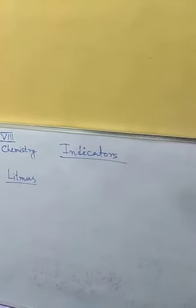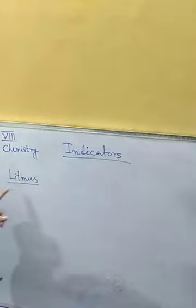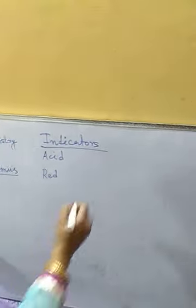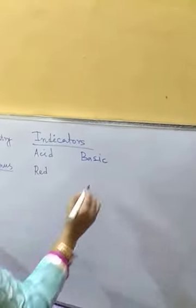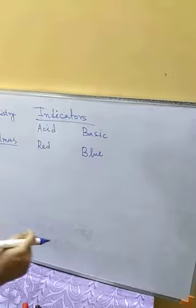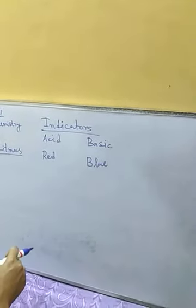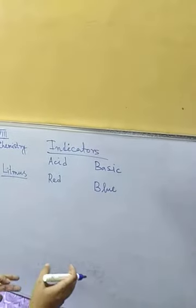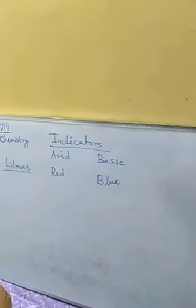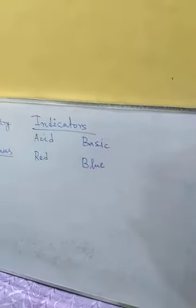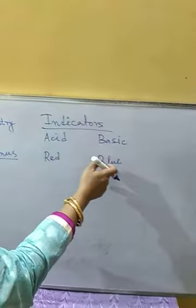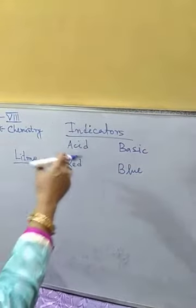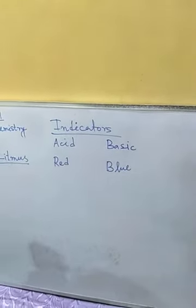First of all, litmus. In acid medium, litmus is red, and in basic medium litmus is blue. So if you dip a blue litmus in an acid solution, it will convert to red. And if we dip a red litmus in a basic solution, it will convert to blue — it will change its color to blue. From this we can understand whether the solution is acidic or basic.